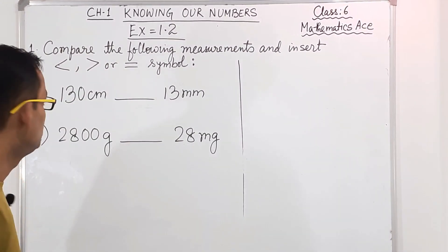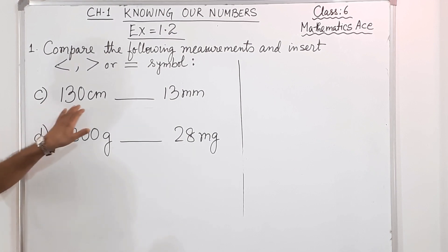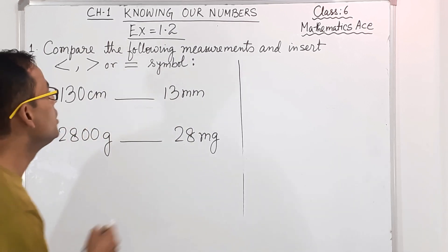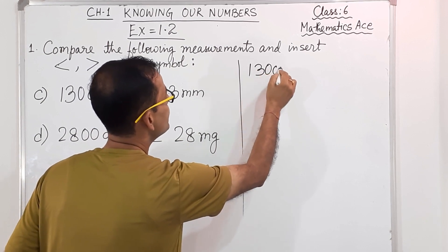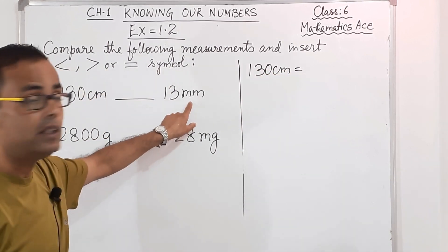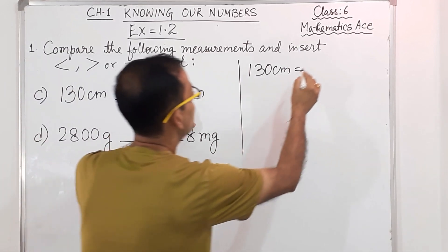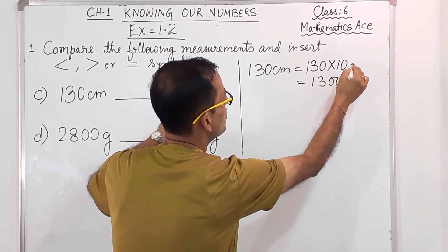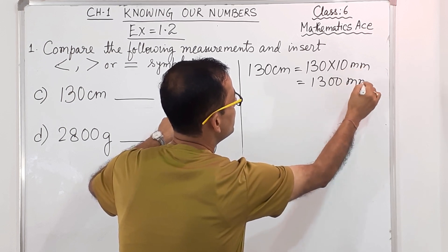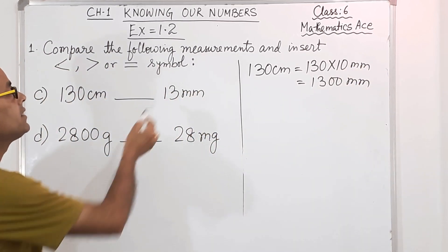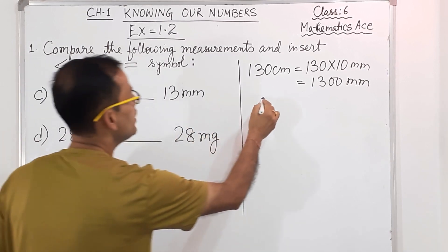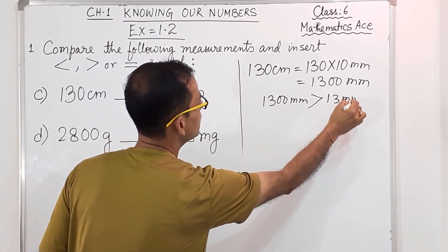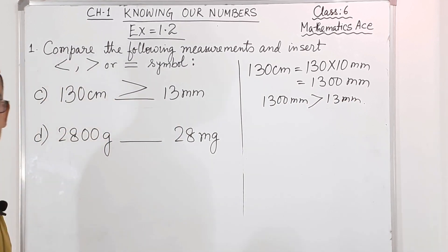Now number C: 130 centimeter versus 13 millimeter. The units are not the same. So 130 centimeter — converting to millimeter, 1 centimeter means 10 millimeters, so 130 multiplied by 10 becomes 1,300 millimeters. And it is 13 millimeter. So obviously 1,300 millimeter is greater than 13 millimeter — the symbol will be greater than.